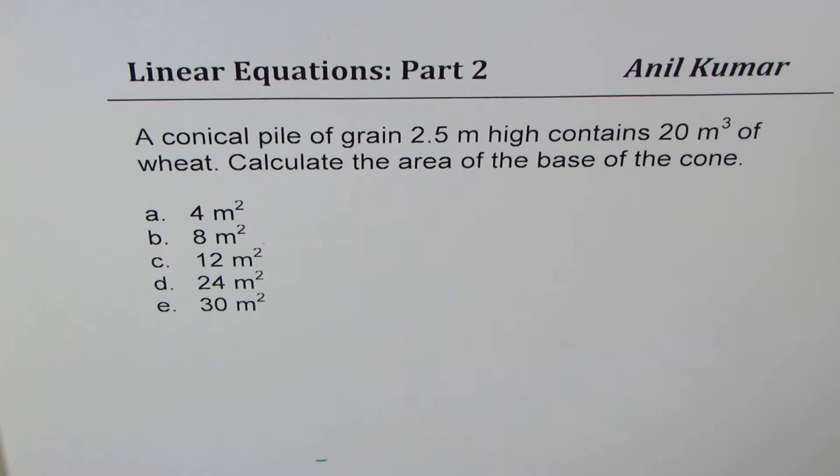A conical pile of grain 2.5 meters high contains 20 cubic meters of wheat. Calculate the area of the base of the cone. We are given five choices.